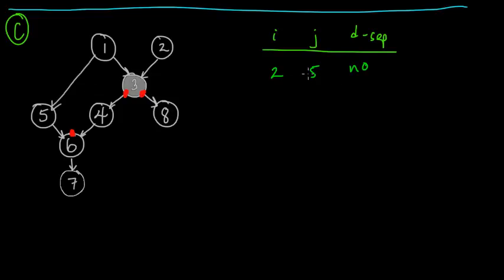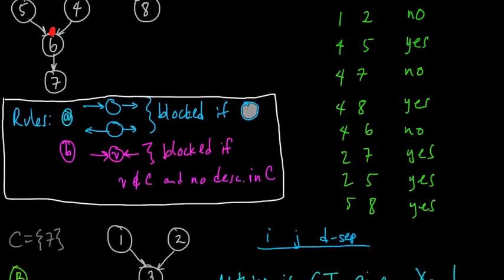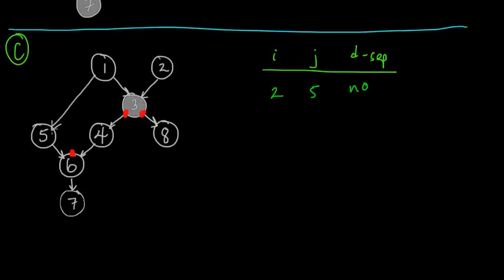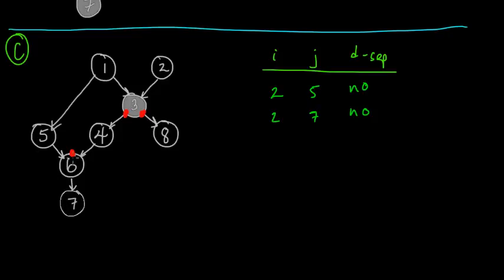Things have changed here — 2 and 5 before were d-separated because we only had the path going through the head-to-head. Now we can go back up through 1, and even though we're conditioning on 3, we can still pass through it here because this is a head-to-head. Now let's look at 2 and 7. We can go 2, 3, 4, 6 — but that's blocked. We can also go to 1, 5, 6, 7, so these are not d-separated either. We can go 5, 6, 7 because the stop sign only applies when going through the head-to-head.